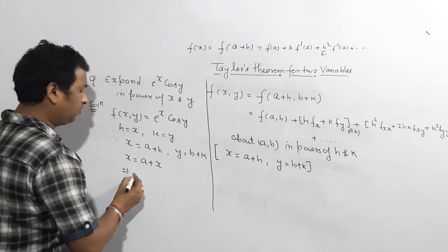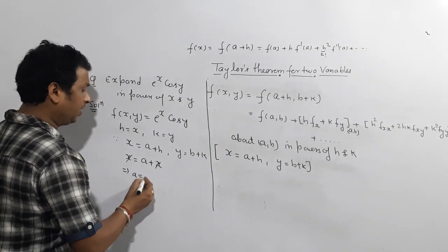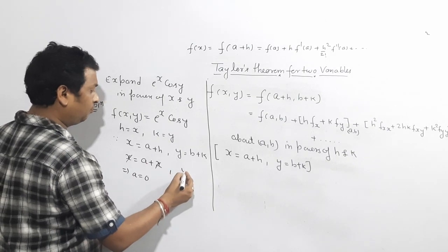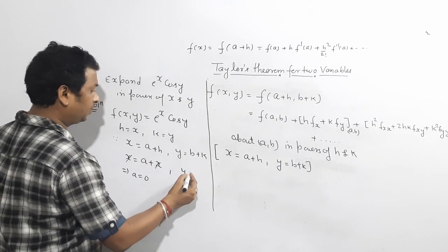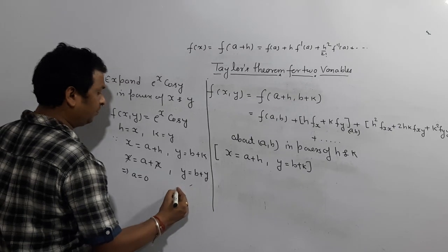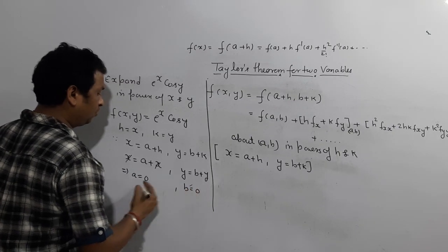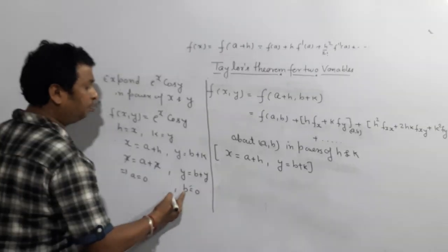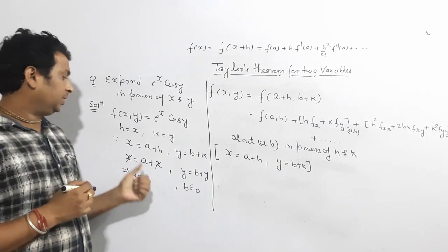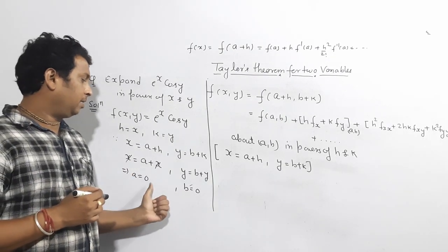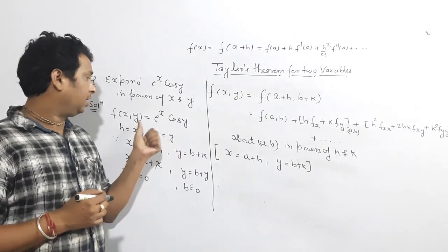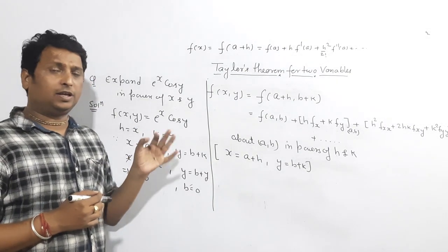Since x = a + h and y = b + k, and h = x, the x cancels so a = 0. Similarly, k = y means y cancels so b = 0. The point we got is (a, b) = (0, 0). h value is x, k value is y, and f(x,y) is e^x cos y.